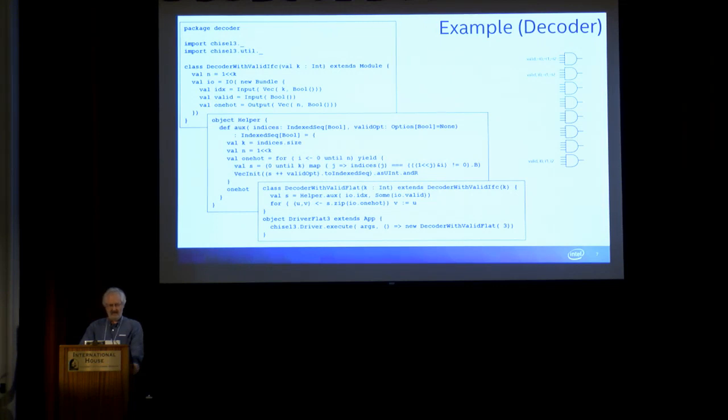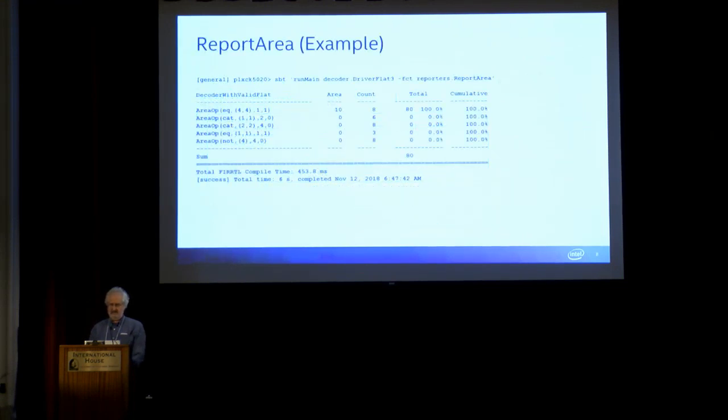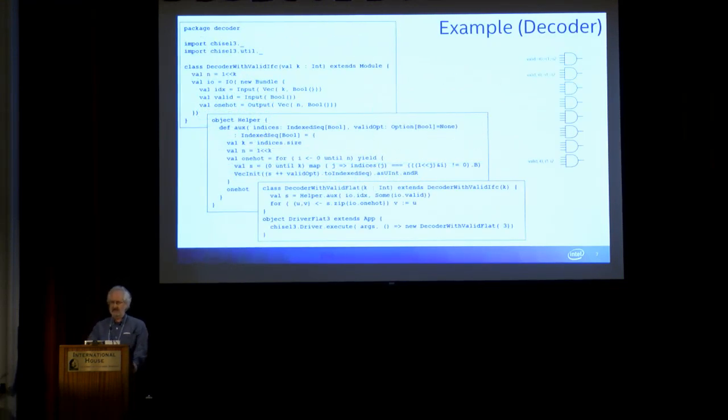I have embedded in there a nice one-line Scala program that you guys can complain about if you want. But I think it's pretty simple. All it's trying to do is compute the inputs to the AND gates—there's a valid in and then all the different combinations of inversions on the inputs for all the different cases. This is an example of how to build a decoder.